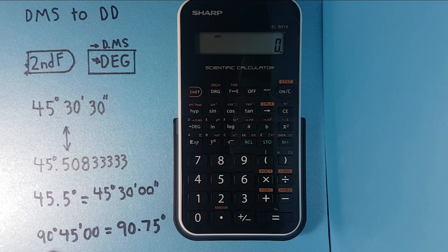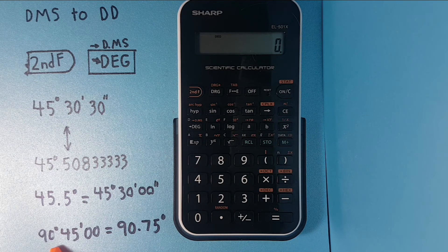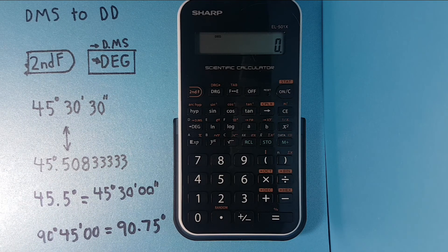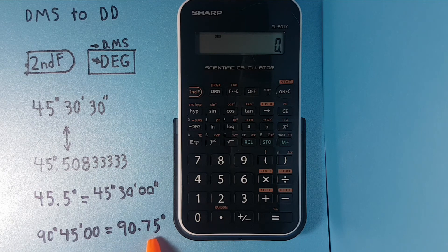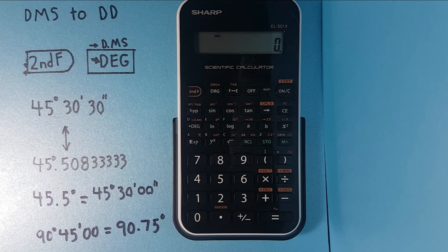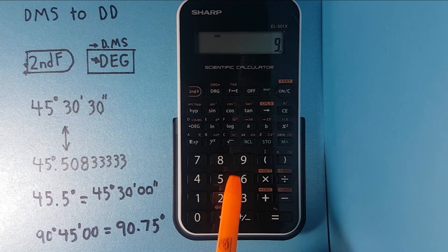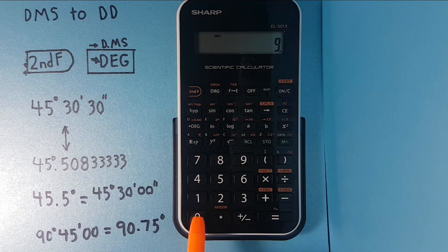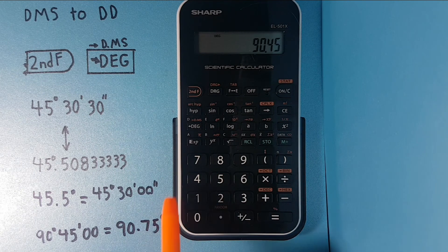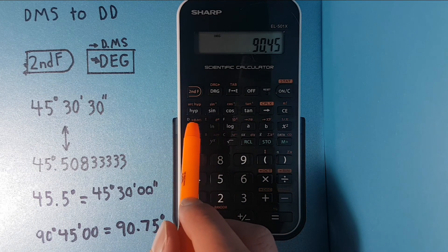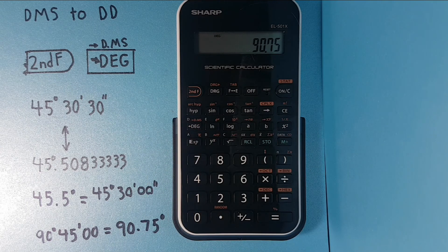Let's try one more. If we take 90 degrees, 45 minutes, 0 seconds, we know we should get 90.75 degrees. So if we enter 90.45 and hit 2nd DEG, we get 90.75, which is correct.